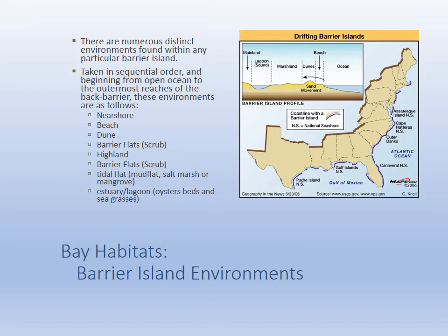Then more flats, more scrub. Then our tidal flat — that's what we hike through at Arrowhead — mud flat, salt marsh, mangrove. And finally, that shallow estuary and lagoon with the seagrasses and oyster beds. We hike through that as well at Arrowhead. So that is the dynamics of the barrier island.